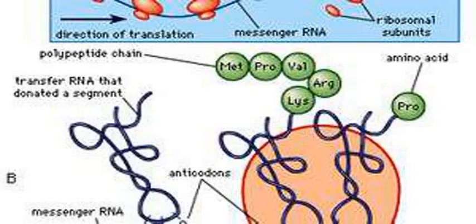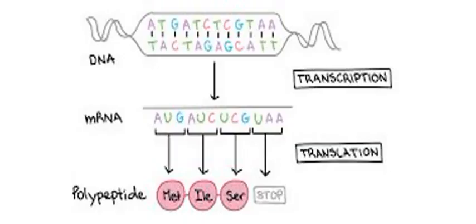This exon sequence constitutes mature mRNA. Mature mRNA is then read by the ribosome and, utilizing amino acids carried by transfer RNA, the ribosome creates the protein. This process is known as translation.